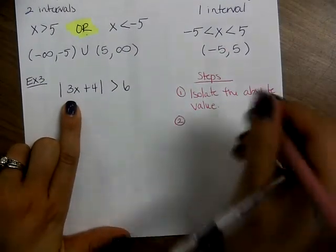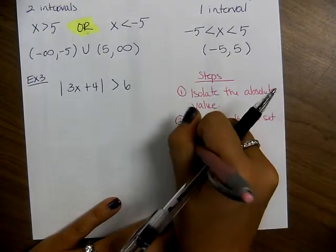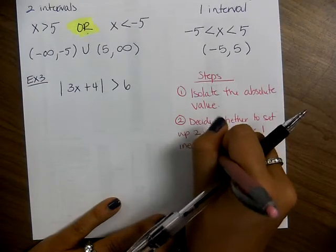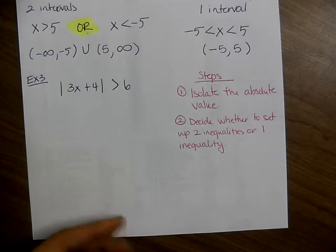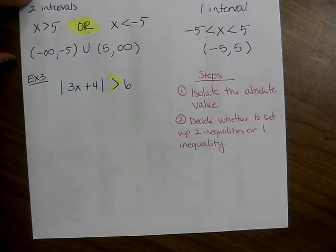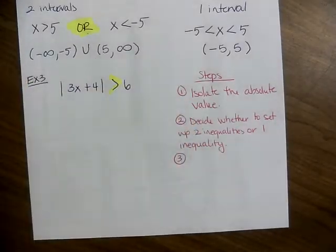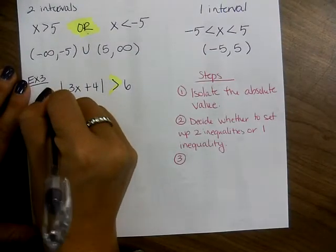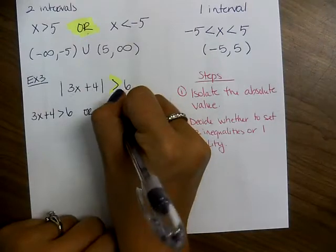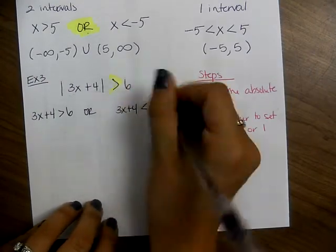Step 2: decide whether to set up two inequalities or one inequality. Here we have a greater than, so we set up two. For the greater than case, one is exactly what you started with: 3x plus 4 is greater than 6. Or, you have the same expression inside the absolute value, flip the sign to less than, and change the constant to negative 6: 3x plus 4 is less than negative 6.